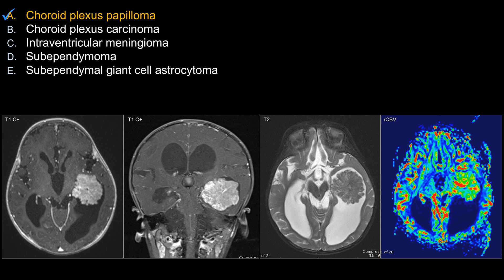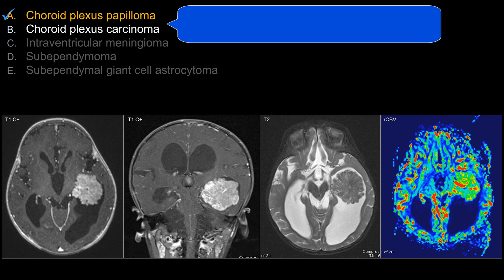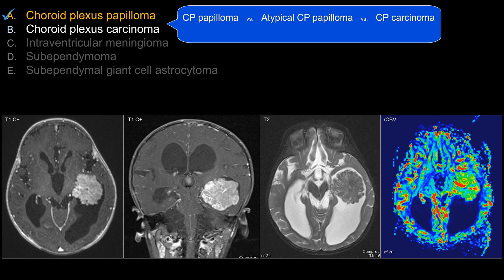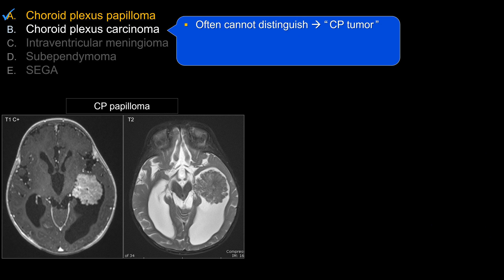Let's look at other choices that do not work as well in this case. For choice B, choroid plexus carcinoma — in general, choroid plexus tumors as a group have three main types: papilloma, atypical choroid plexus papilloma, and choroid plexus carcinoma. All of them tend to occur in kids. You would think that because carcinoma is more aggressive, its imaging appearance should be more aggressive compared to papilloma. But in reality, it's often difficult, if not impossible, to make that distinction on imaging alone.